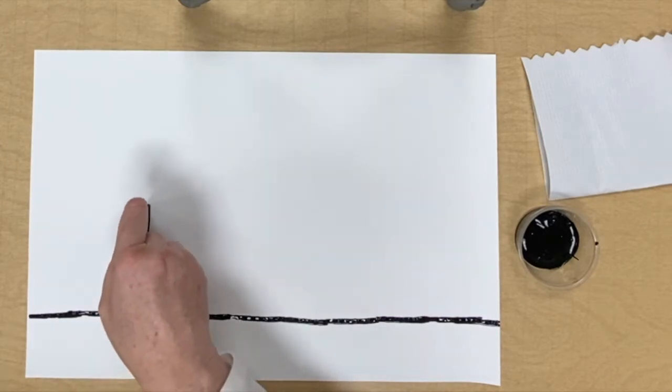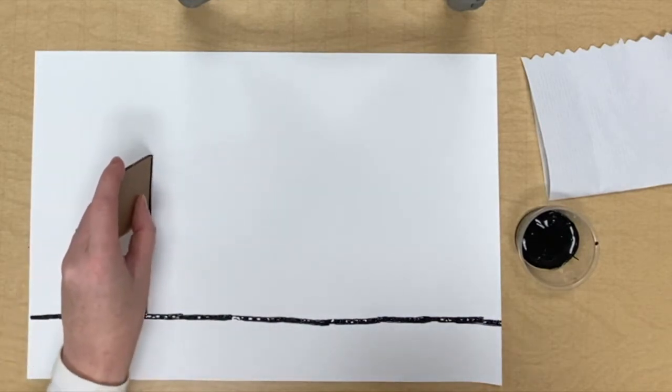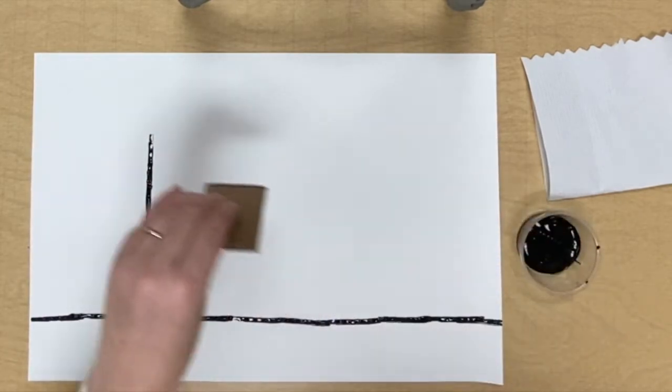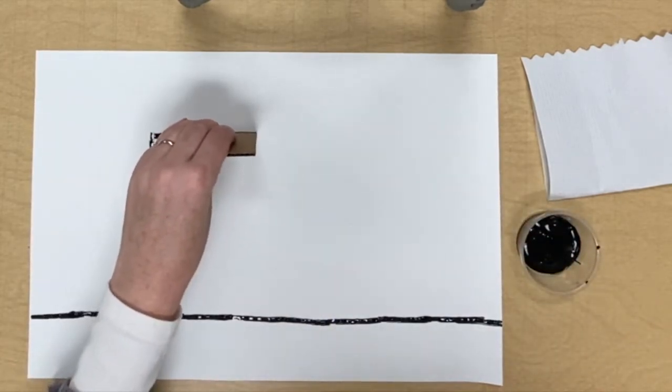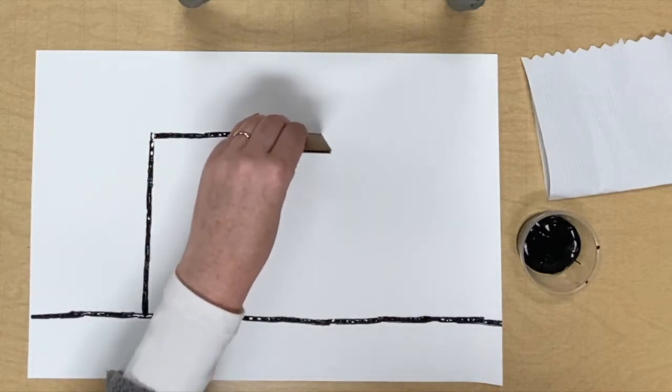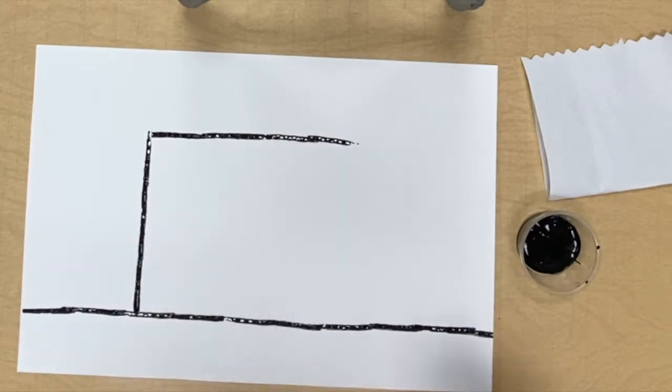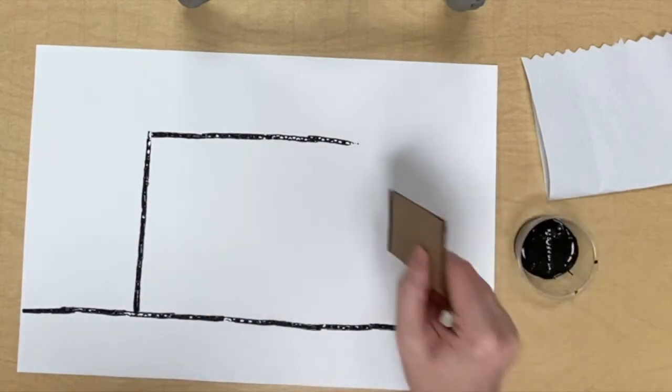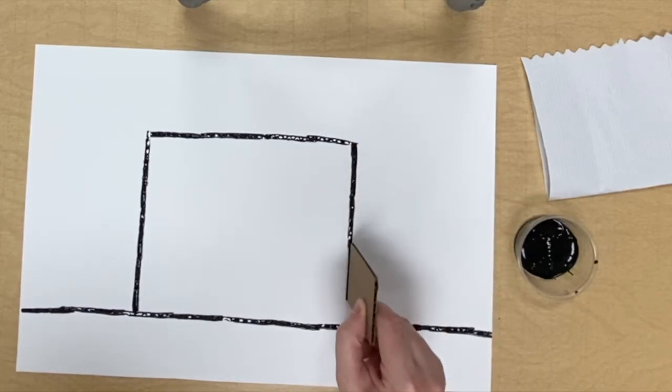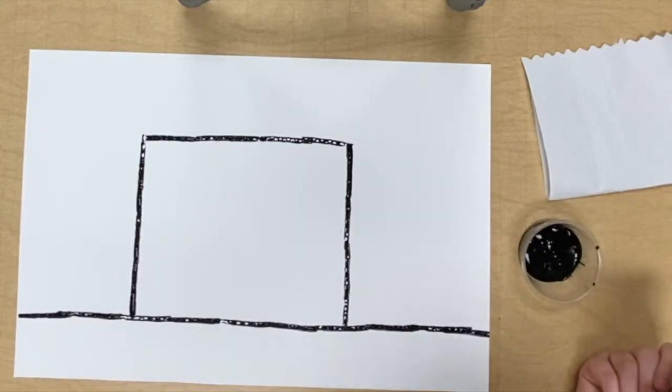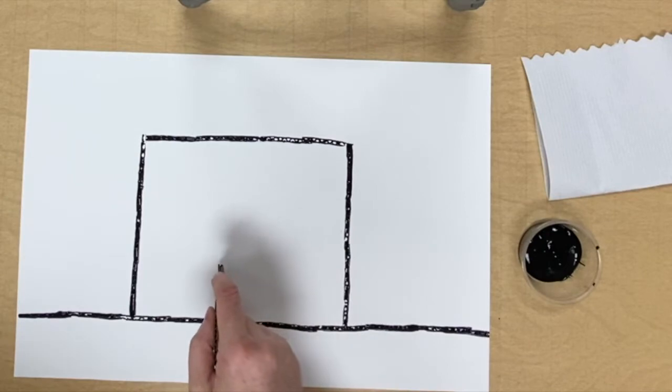Now I'm ready to make a shape. This is going to be a really large shape. If I miss a spot I can go back and fill it in. It looks like I can get about three prints before I have to dip in the paint again. So what shape did I make? Yes, a large square.